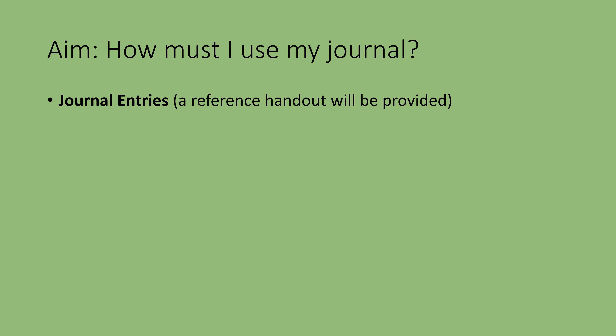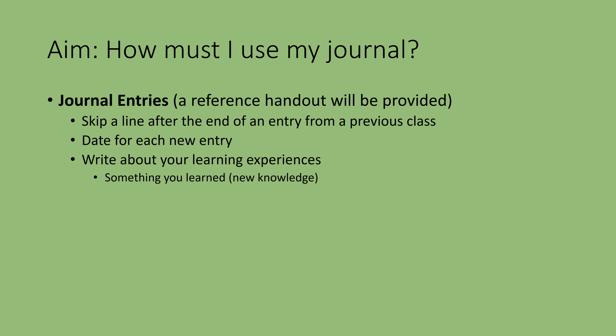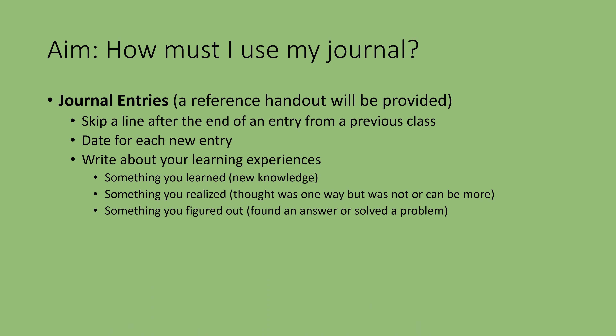Here are instructions for writing in your journal. A reference handout with these instructions will be provided at your desk. Skip a line after the end of an entry from a previous class. Write the date for each new entry. Write about your learning experiences: something you learned, like new knowledge; something you realized, which was something you thought was one way but was not or could be many more ways; and something you figured out, which is something you found an answer or solved a problem for.